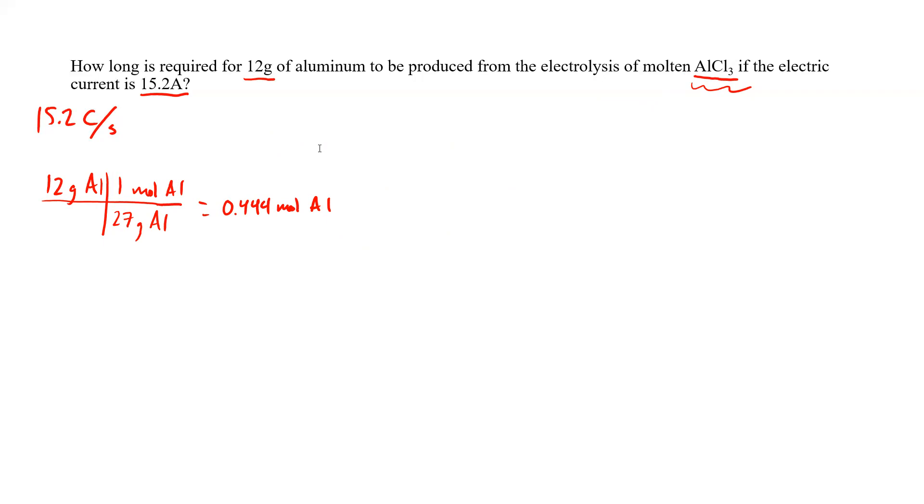So what we're going to be able to do is say 0.444 moles of Al. We are going to say that one mole of Al is going to be produced from three moles of electrons because we know our reaction Al³⁺ plus three electrons yields Al.